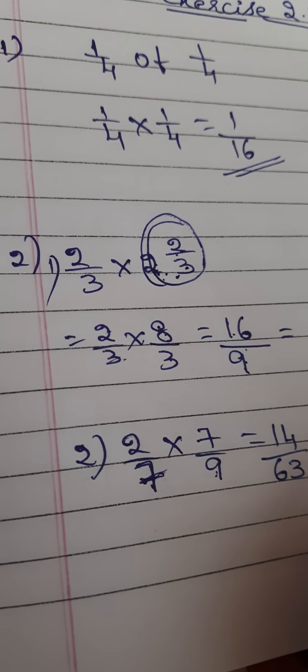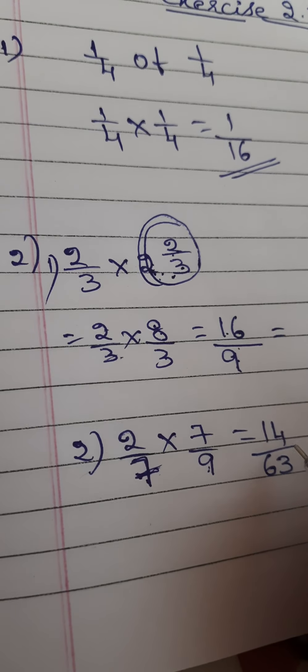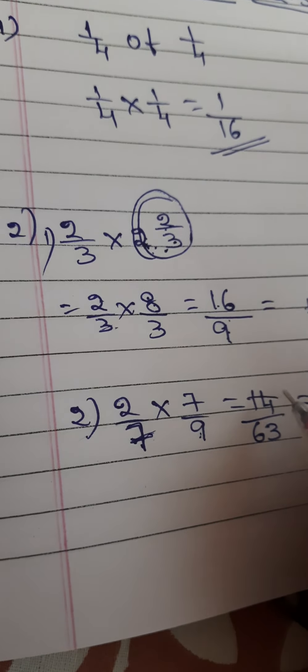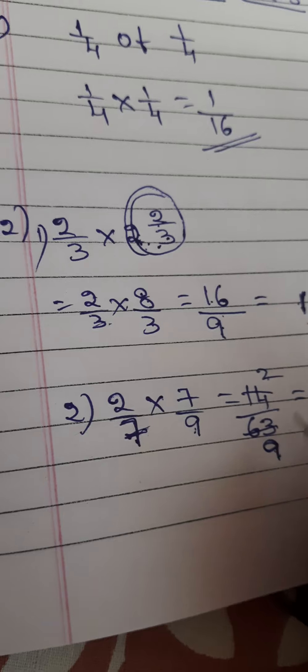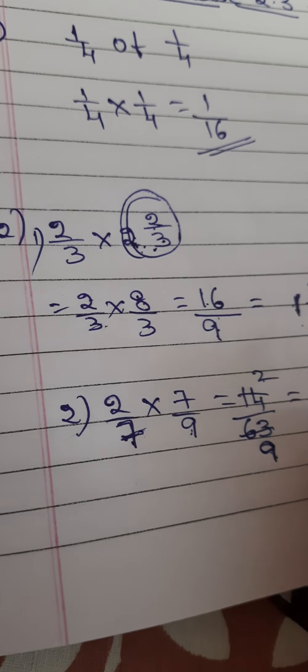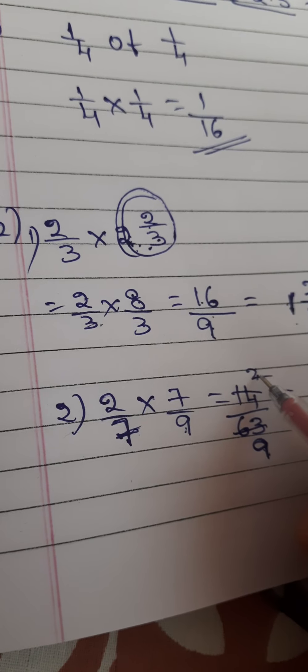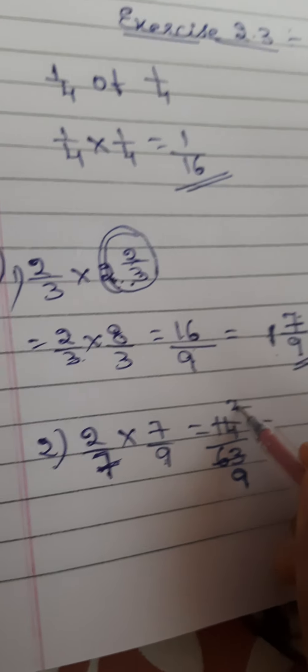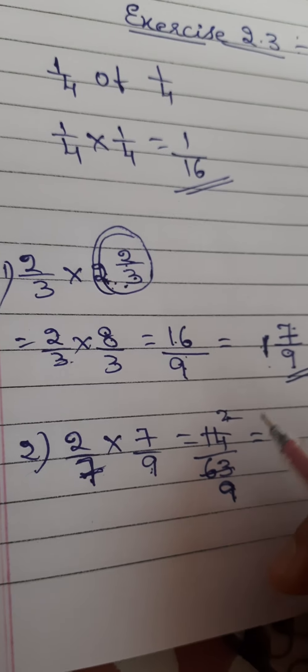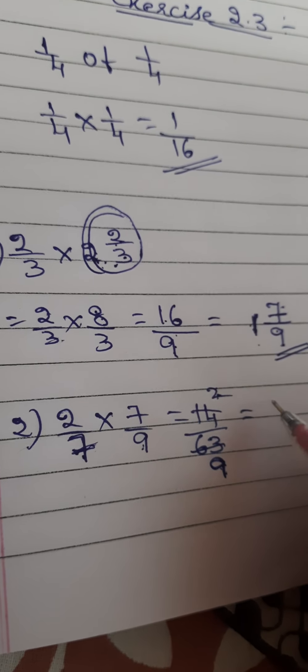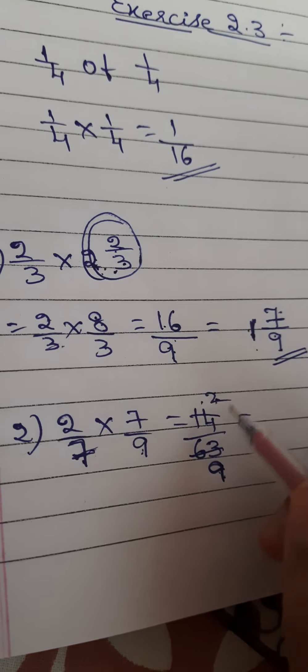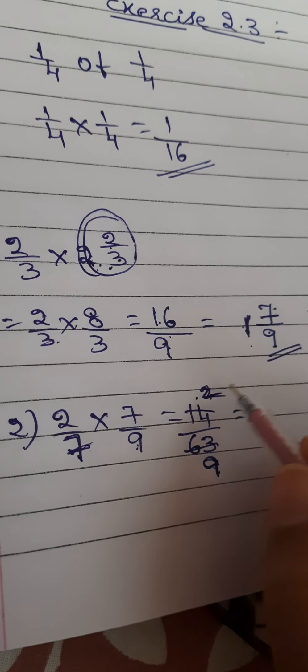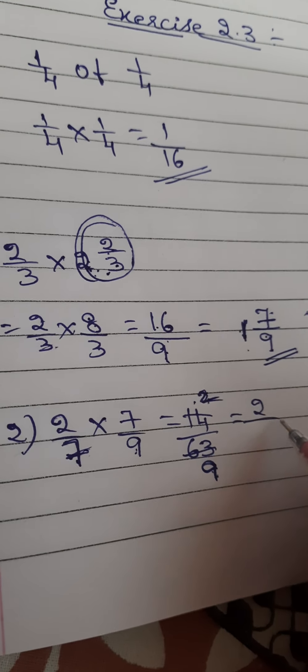Now here you see in the 7 table: 7 twos are 14, 7 nines are 63. So now here you got 2/9. How can you write it? Here, the numerator is 2 and the denominator is 9. We can't write it in a simpler form because, if it were a larger number, we could simplify, but here it is only 2. So we can't reduce it to a lower number. So the answer is 2/9.